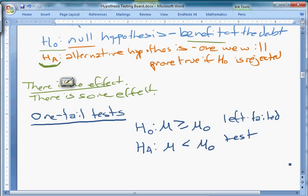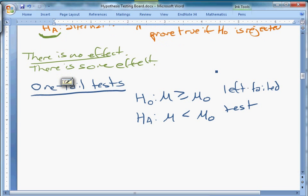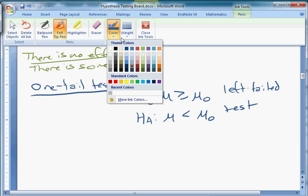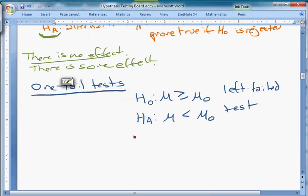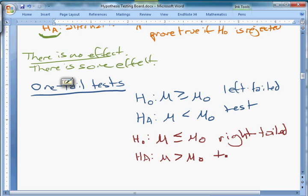You might also have a right-tailed test, which looks like this. Let me switch colors here. H0 mu less than or equal to mu zero, HA mu greater than mu zero. This is a right-tailed test. Now, why was this a left-tailed test and a right-tailed test?